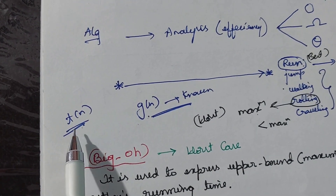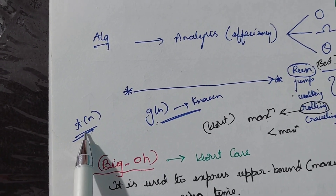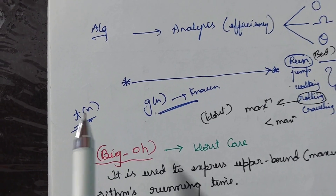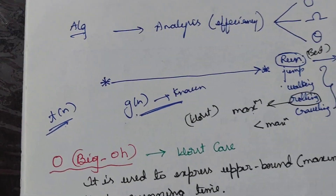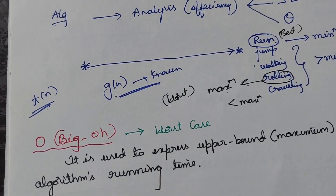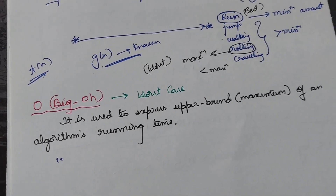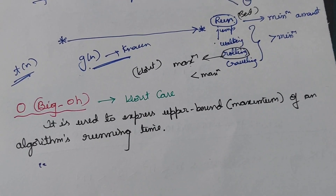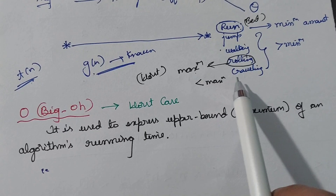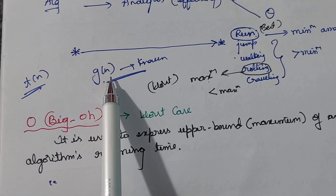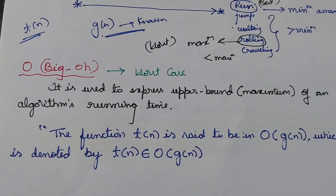g(n) is the known algorithm, and t(n) is the algorithm for which we need to decide whether it belongs to the worst case, average case, or best case. Just like whenever we want to say who is the best batsman in cricket, we compare the new batsman with Virat Kohli — similarly, g(n) is the known reference and t(n) is what we are comparing against it.